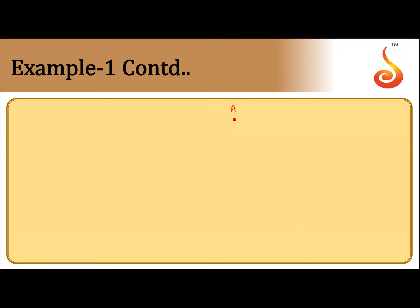Let us say this is charge A and here is charge B. Charge A is plus 4 microcoulomb and charge B is minus 1 microcoulomb. These two are unlike charges. When charges are unlike, the null point will divide the line joining A and B externally, and it will be nearer to the weaker charge, that means nearer to the minus 1 microcoulomb charge.